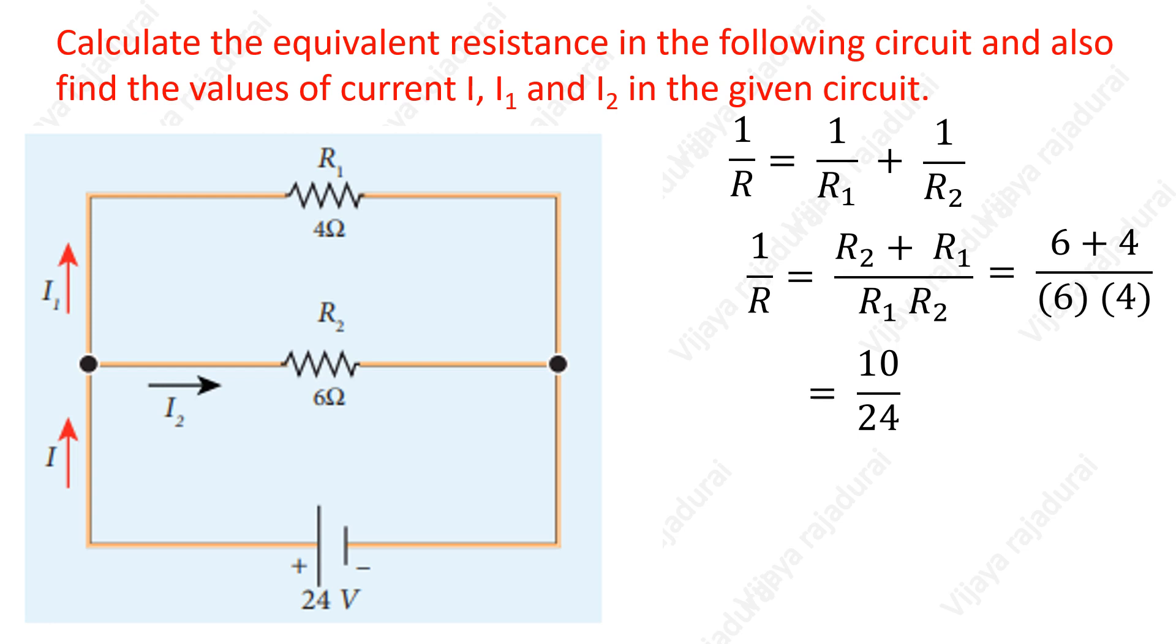So, reciprocal of this value gives equivalent resistance R. 24 by 10 is equal to 2.4 ohm.